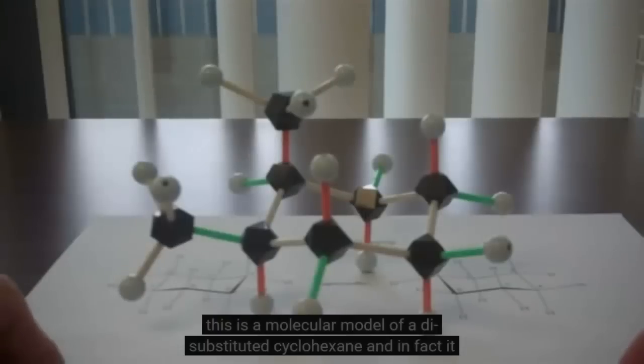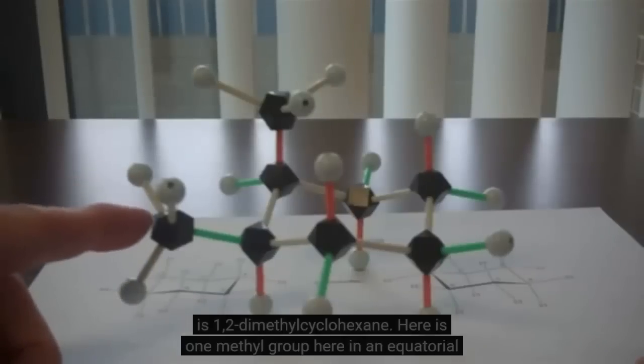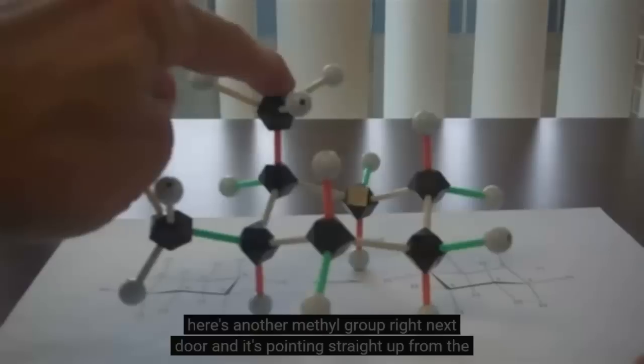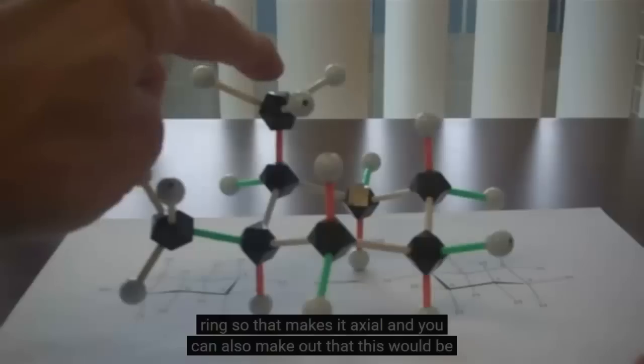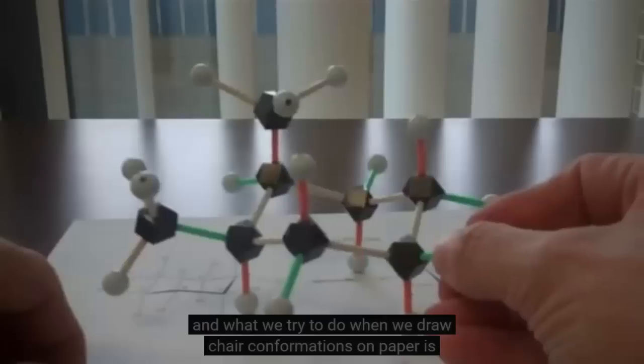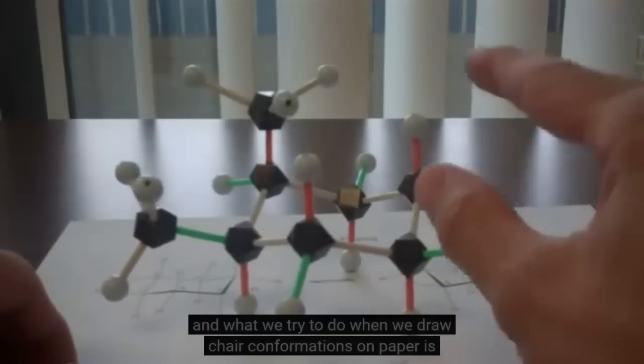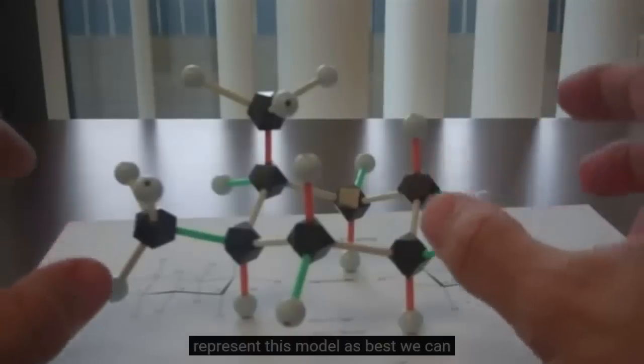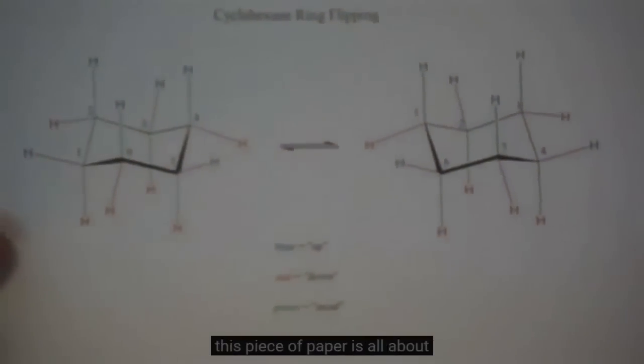This is a molecular model of a disubstituted cyclohexane, and in fact it is 1,2-dimethylcyclohexane. Here's one methyl group in an equatorial position, here's another methyl group right next door pointing straight up from the ring, so that makes it axial, and you can also make out that this would be the cis isomer.